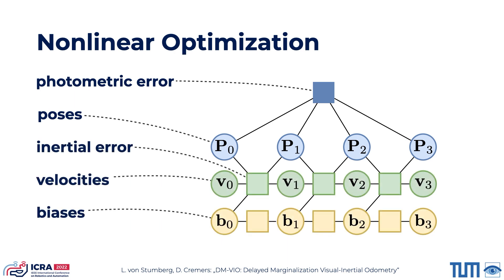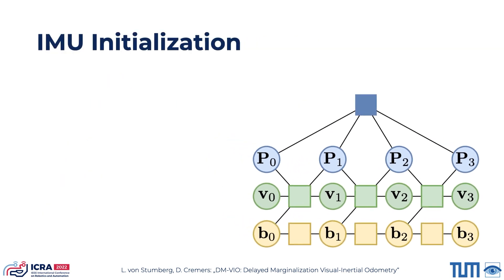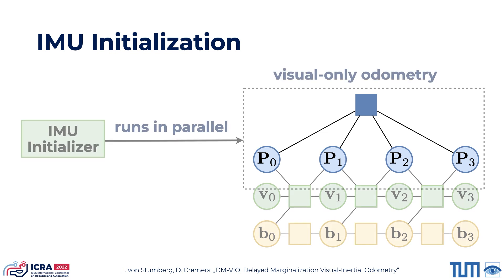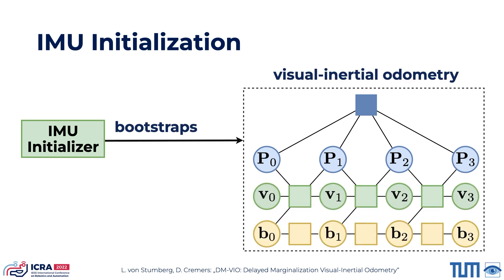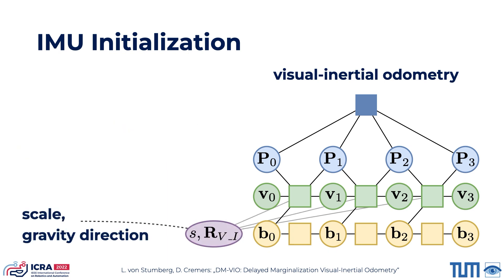For mono-inertial systems, IMU initialization is a difficult task as it can take a long time until the scale becomes observable. Similar to other systems, we start with a visual-only odometry running in parallel to an IMU initializer which can then bootstrap the visual inertial system. But unlike other systems, we continue to optimize the scale explicitly in the main system, allowing us to initialize early as inaccurate scale estimates can be compensated later.